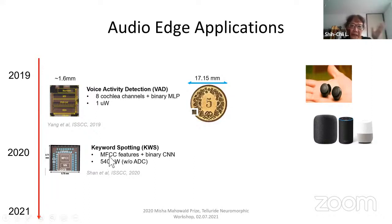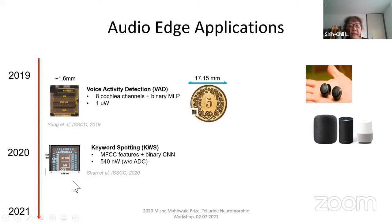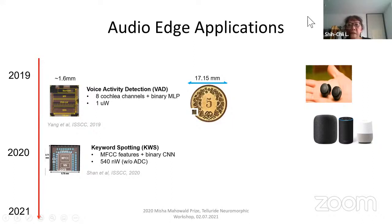At ISSCC, where many state-of-the-art designs in audio edge circuits are presented, there is a lot of interest in keyword spotting. Here's another design from a year later where they tried to compete using MFCC features and a binary CNN. They burned about 540 nanowatts, but this does not include the ADC power — because you do have to perform the ADC before you can compute the MFCC features. It's very exciting to see how much we can shrink the chips along with the power and latency while maintaining accuracy, and to understand at what point we can show that neuromorphic technology is as useful as — or even better than — a conventional solution.